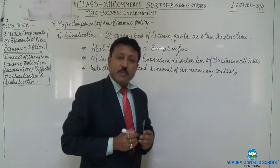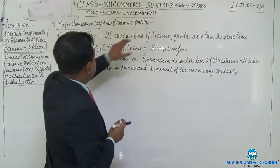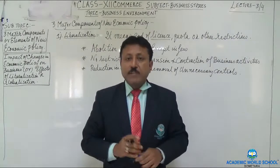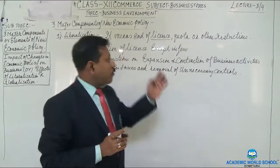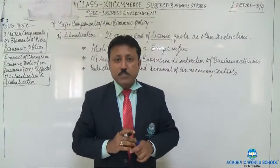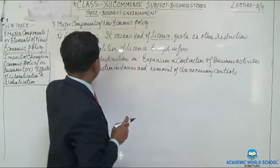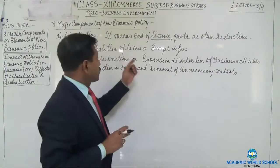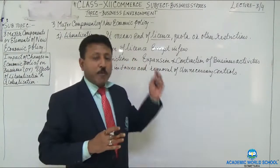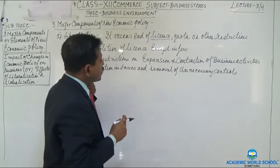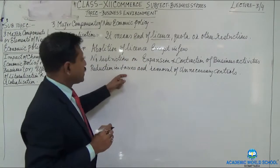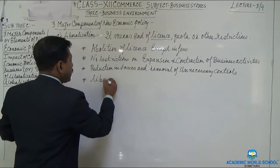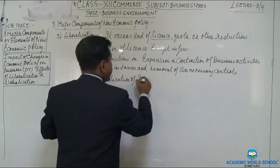Let me explain these three points. Liberalization means the end of license, quota, or other restrictions. Before the new economic policy of 1991, Indian companies faced a lot of licenses, quotas, and restrictions. The policy tried to remove all these, and the main change was abolition of license — meaning finishing off or taking away the rules. There were also no restrictions on expansion and contraction of business activities, reduction in taxes, removal of unnecessary controls, and liberalization of imports and exports.